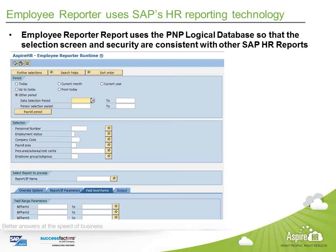When we look at the report running portion of the solution, it looks very similar to other SAP HR and payroll reports because we use the SAP HR reporting framework — specifically the PNP Logical Database for those more technical in the audience. It provides all the great selection criteria and security criteria you associate with SAP HR reports. You can do date selection on key dates, date ranges, and pay periods. You can do employee selection based on employee numbers and enterprise structure criteria, further selections, search helps, and sort orders as well.